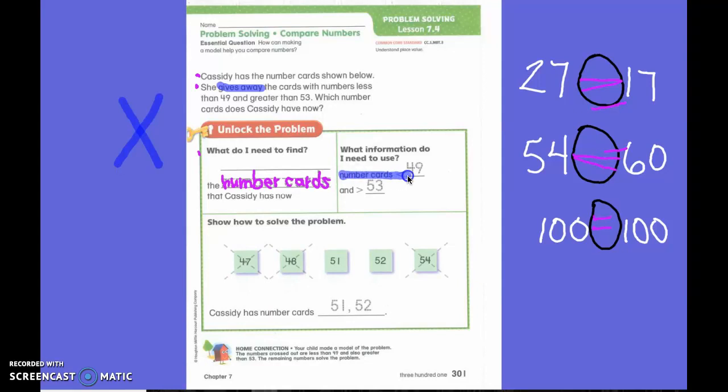So we know that we are going to cross out the number of cards that are less than 49. So I'm going to ask that question on every single one. Is this less than 49? Yeah, so what am I going to have to do? Cross it out. Is this less than 49? So what am I going to have to do? Cross it out. Is this less than 49?